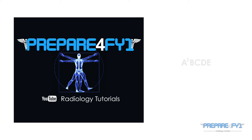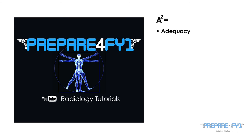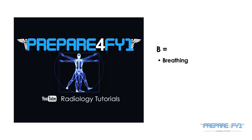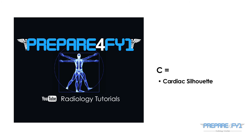The approach we will use is an A2BCDE one. A2 is composed of adequacy of the film and airway. B stands for breathing, C for cardiac silhouette, D for diaphragm, and E for everything else.